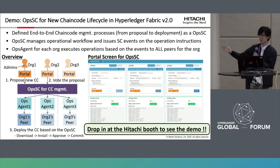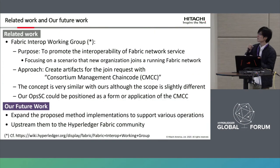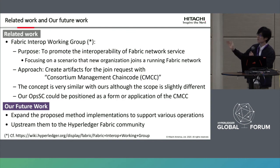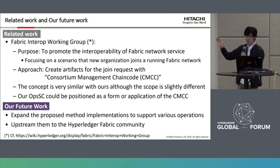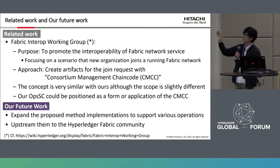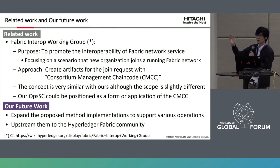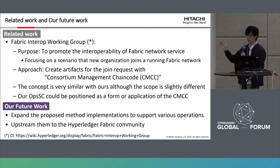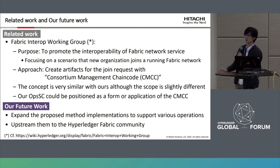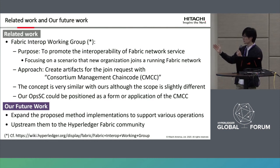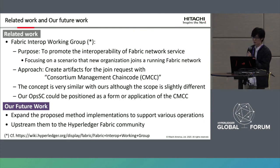Please drop in at the Hitachi booth on the third floor to see the demonstration. Regarding related work, the Fabric Interop Working Group aims to promote interoperability of Fabric network services, focusing on scenarios where a new organization joins an existing Fabric network — creating artifacts for join requests with a consortium management chaincode. The concept is very similar to our work, though the scope is slightly different. Our smart contract could be positioned as a form or application of their proposed consortium management chaincode. In the future, we will expand the proposed method's implementation to support various operations and plan to upstream them to the Hyperledger Fabric community.